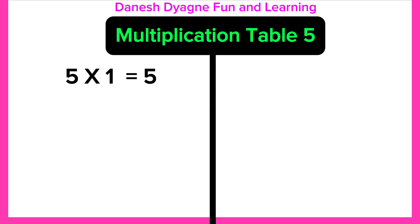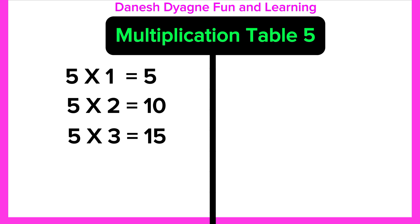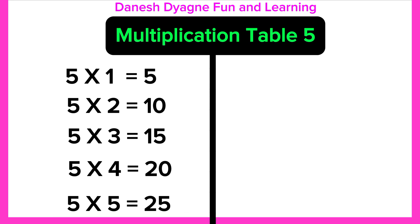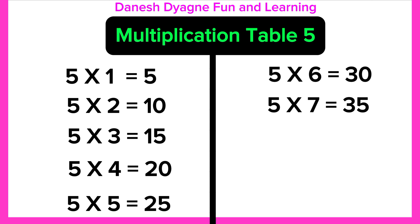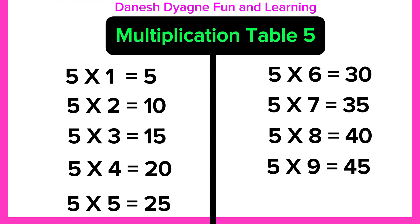5 times 1 equals 5. 5 times 2 equals 10. 5 times 3 equals 15. 5 times 4 equals 20. 5 times 5 equals 25. 5 times 6 equals 30. 5 times 7 equals 35. 5 times 8 equals 40. 5 times 9 equals 45. 5 times 10 equals 50.